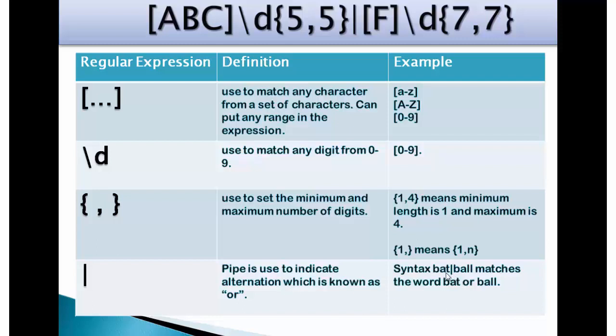And then I have put F capital within square brackets which means if it is not A, B, C then it is F backslash D which means any digit between 0 to 9 followed by brace 7,7 meaning 7 digits minimum 7 digits max after F.